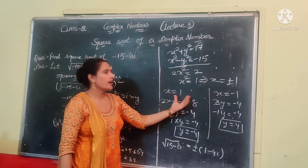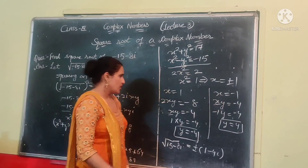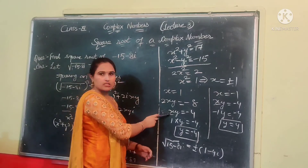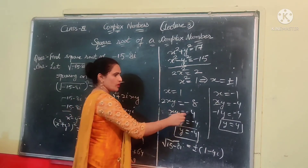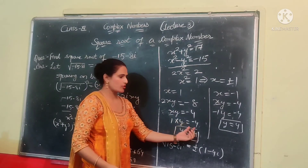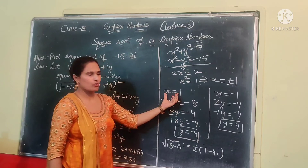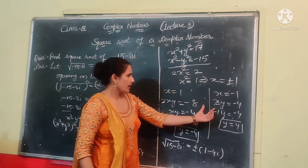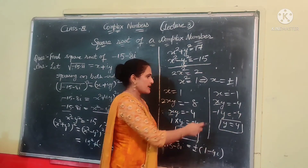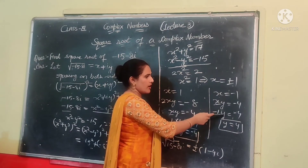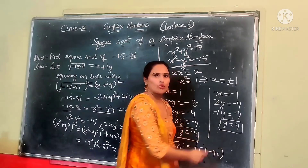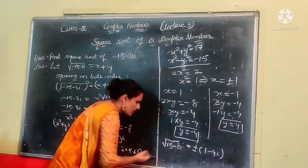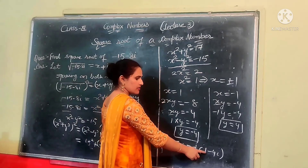We have two cases: when x equals 1 and when x equals minus 1. Since 2xy equals minus 8, we have xy equals minus 4. When x equals 1, y equals minus 4. In the second case, when x equals minus 1, putting x equals minus 1 into xy equals minus 4, we get y equals 4. Combining these two results, the square root of minus 15 minus 8 iota equals plus or minus (1 minus 4 iota).